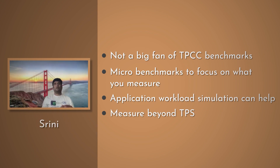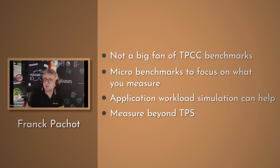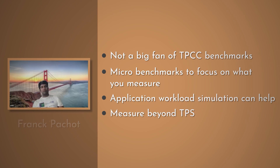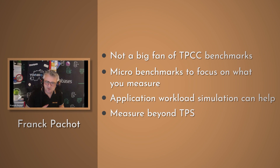That's a very good point, because typically people just look at the TPS and won't look at other bottlenecks like CPU, I/O, or memory. Also, look at the execution plans. Before taking any conclusion, be sure that you have the right execution plan. Probably for generic benchmarks they are created with the right indexes, but just be sure that everything works well before publishing numbers.